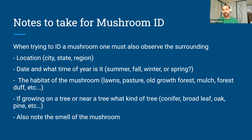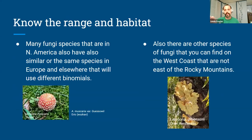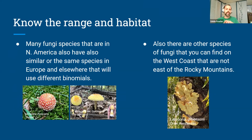Also note the smell of the mushroom — whether it's foul, pleasant, or completely neutral. All these things can definitely help you later when wanting to get a species identification. You also want to know the range and habitat of mushrooms. Many fungi species in North America also have a very similar or the same species in Europe but under different binomials, which can be confusing. Just notice whether the name you're using is for a North American or European species.